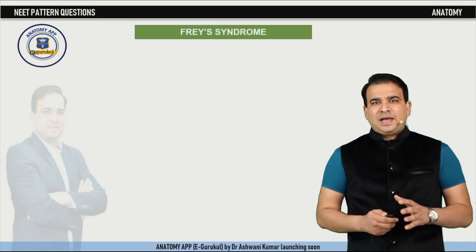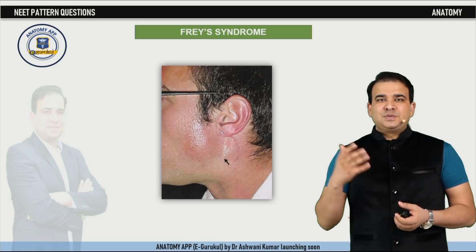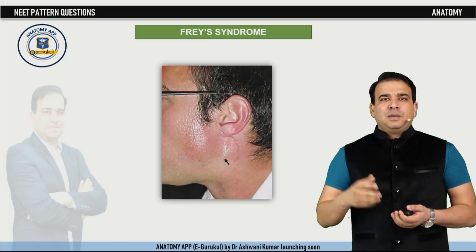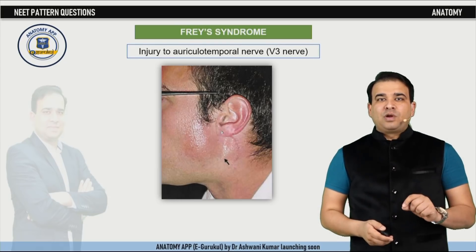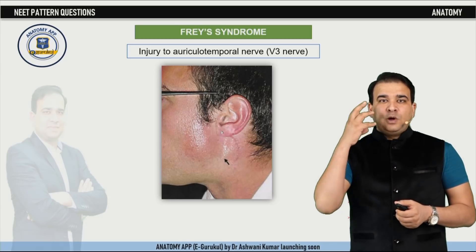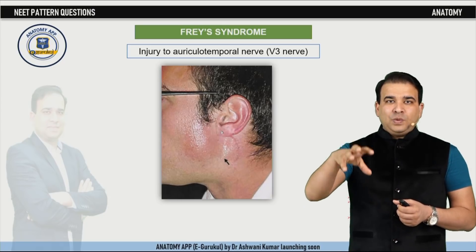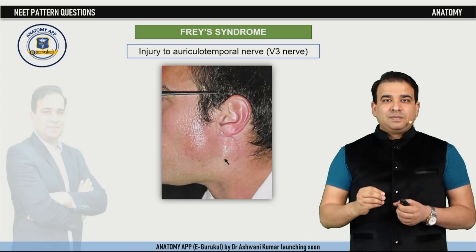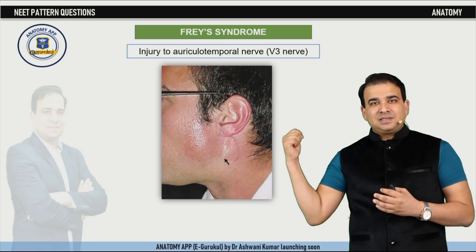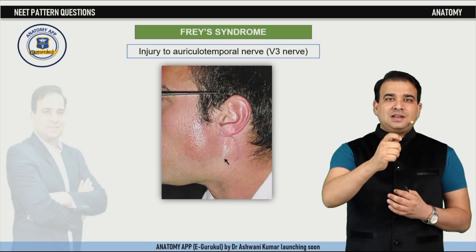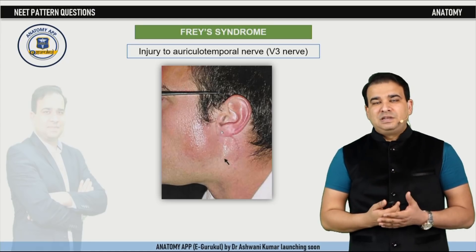Frey syndrome is a surgical complication or accidental injury to the auriculotemporal nerve. When the auriculotemporal nerve regenerates, it sometimes fuses with other nerves — most commonly the great auricular nerve. The injury in Frey syndrome is to the auriculotemporal nerve, a branch of the trigeminal nerve. All parotid gland secretomotor fibers originate from the glossopharyngeal nerve, but the glossopharyngeal nerve does not reach the gland directly. Post-ganglionic innervation always reaches the gland via a trigeminal branch — in this case the auriculotemporal nerve, which is a branch of the posterior division of the mandibular nerve, relays from the otic ganglion to supply the parotid gland.